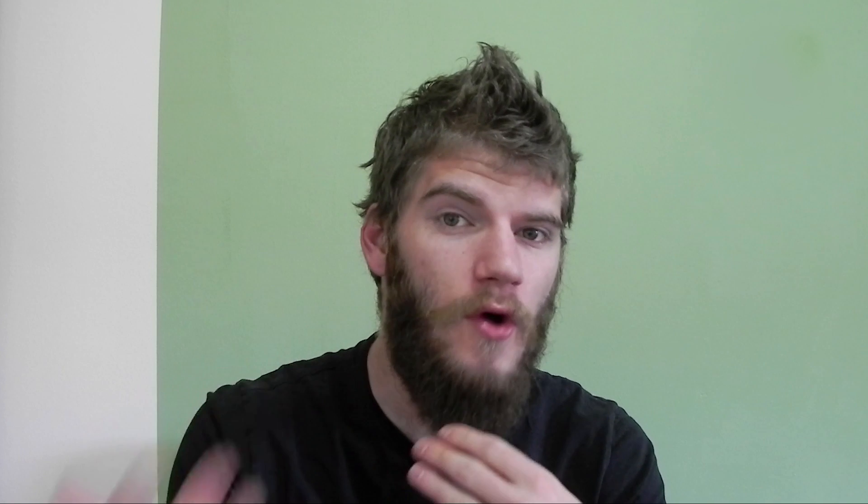At some point in our spinal cord, those nerve fibers connect — they are all passing through the same spot on their path to the brain. And on that spot we have inhibitory neurons, neurons that control all of that traffic.